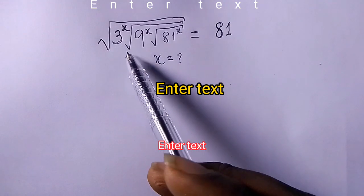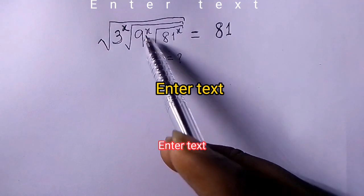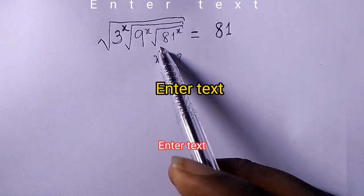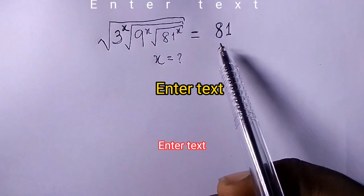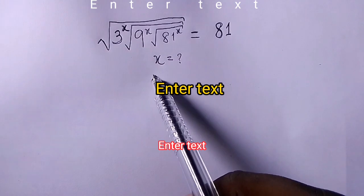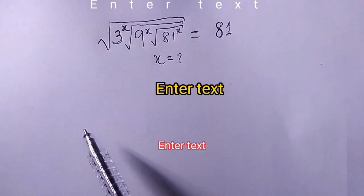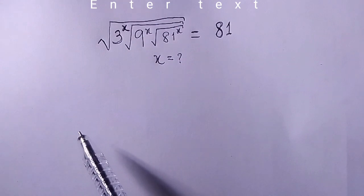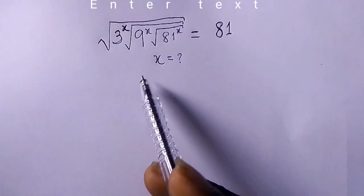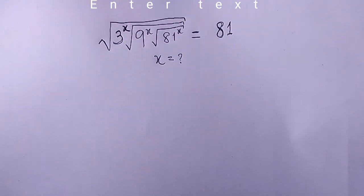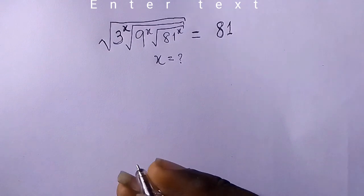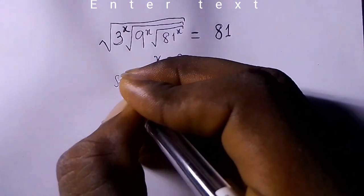Root 3 raised to the power of x, root 9 raised to the power of x, root 81 raised to the power of x equals 81 — find x. Hi there, this is Daily Mathematics and today we have this very interesting question to solve. How do we find x? Please like the video, subscribe to the channel, and let's get into it.